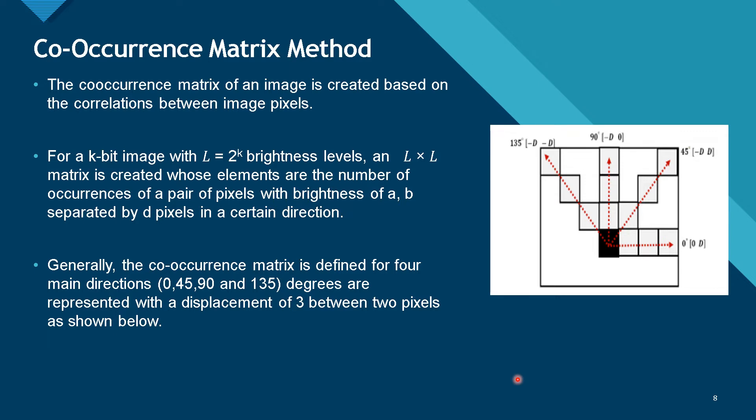Now, let's go to the second method: co-occurrence matrix method. The co-occurrence matrix method is all related to the correlation between the image pixels, the neighborhood pixels or ending pixel to the starting pixel. In this method, we will take a K-bit image, such that it has 2^K brightness levels. And the co-occurrence matrix will have L by L, where L is 2^K. For example, if we take a 3-bit image, we will have an 8 by 8 matrix that is created, so that the number of occurrences of a pair of pixels with the brightness A, B, R's in a separate distance are taken in that matrix.